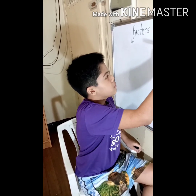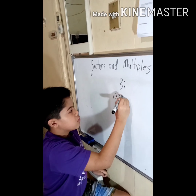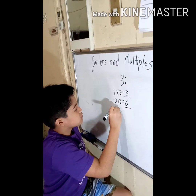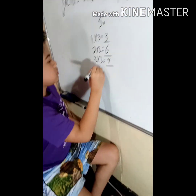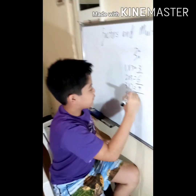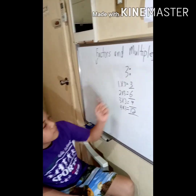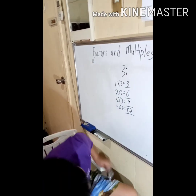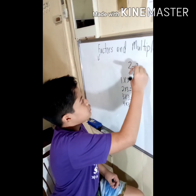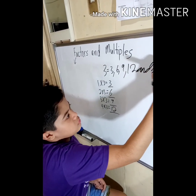Let's give multiples of 3. The multiples of 3 are: 1 times 3 is 3, 2 times 3 is 6, 3 times 3 is 9, 4 times 3 equals 12, and so on. So the multiples of 3 are 3, 6, 9, 12, and so on.